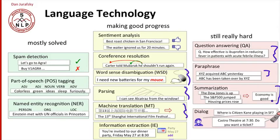Even harder is the task of summarization — reading a number of news articles that say the Dow Jones is up, the S&P 500 has jumped, and housing prices rose, and aggregating that to give a user information like 'in summary, the economy is good.' And finally, one of the hardest tasks in natural language processing is carrying on a complete human-machine communication and dialogue. Here's a simple example asking about what movie is playing when and buying movie tickets — you can get applications that do that today. But the general problem of understanding everything the user might ask and returning a sensible response is quite difficult.